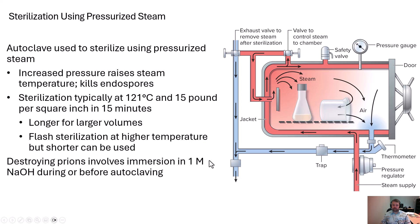We talked at the very beginning of this course how just washing your hands was a huge advantage in the late 1850s. Well, in the 2000s, machines like autoclaves have really allowed us to make sure our instruments, liquids, or whatever are as sterile as possible prior to use.